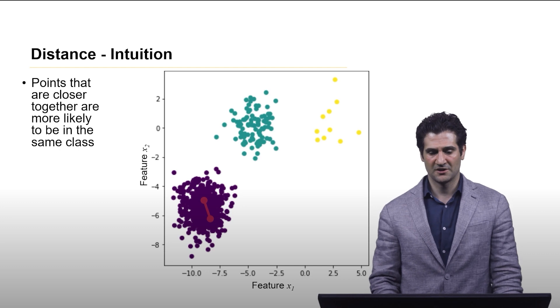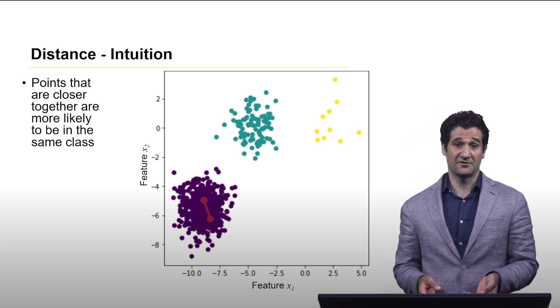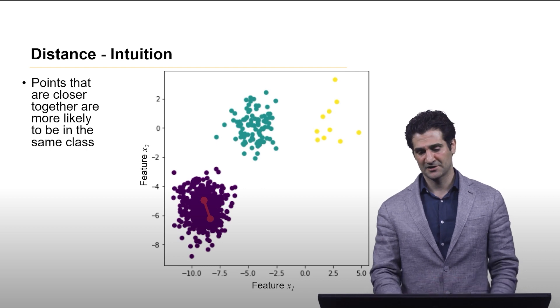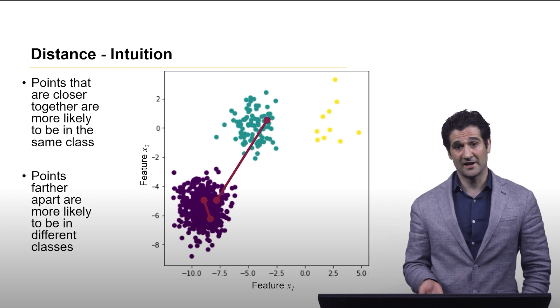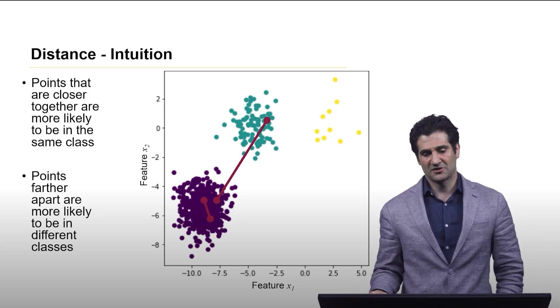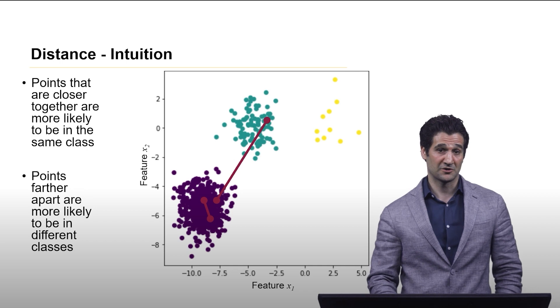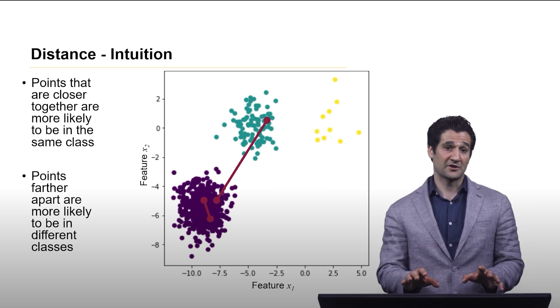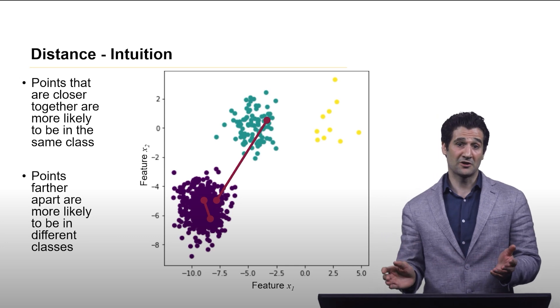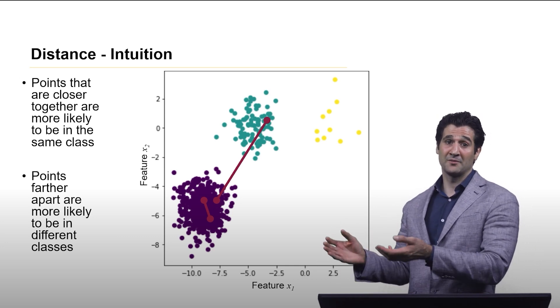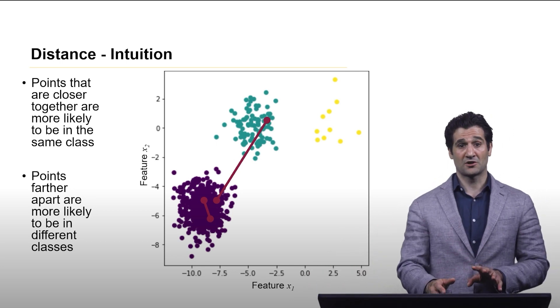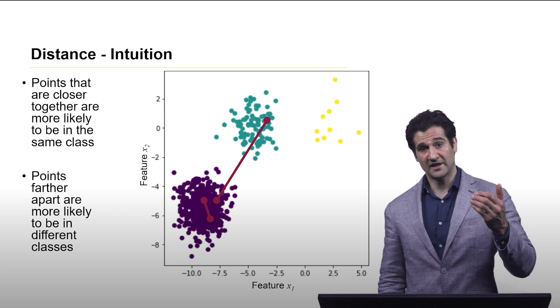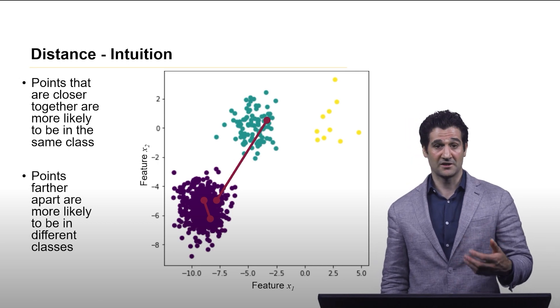The intuition is that points that are closer together in the feature space for a classification problem are much more likely to be in the same class, and points that are far away are probably going to be in different classes. This intuition carries through a lot of different approaches in machine learning. In this talk we're just going to talk about the distance function itself, because many machine learning approaches will assume that we're given a distance function.